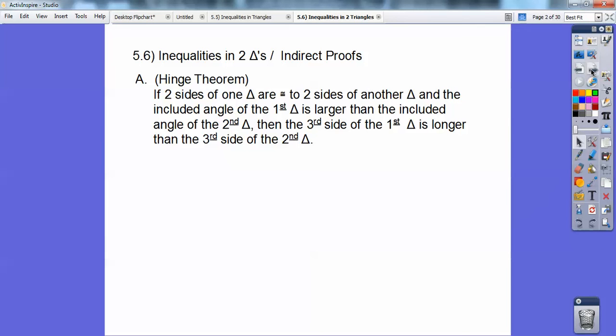So, the Hinge Theorem says this. If two sides of one triangle are congruent to two sides of another triangle, and the included angle of the first triangle is larger than the included angle of the second triangle, then the third side of the first triangle is longer than the third side of the second triangle. And you're thinking, what?